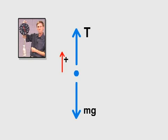The next step is to write the net force equation, F net equals. Now the upward force is T and that will be positive, so I'll write that first. And the downward force is mg and that's negative, so that will be subtracted from T.